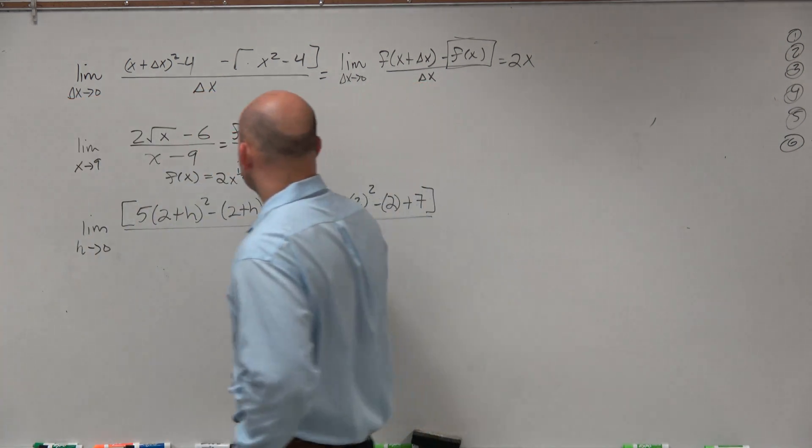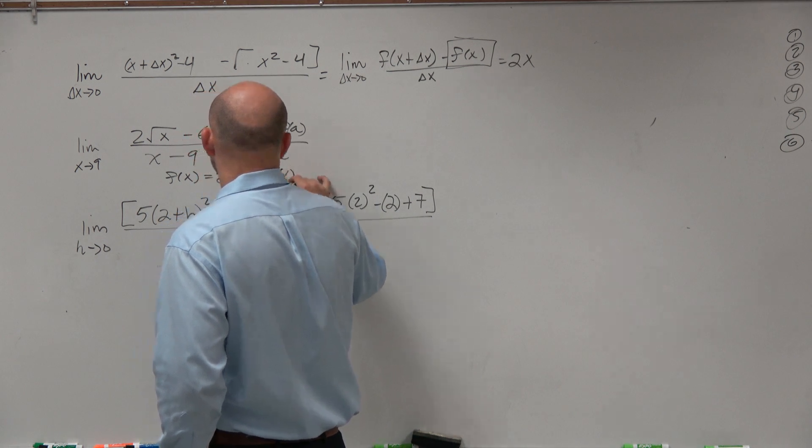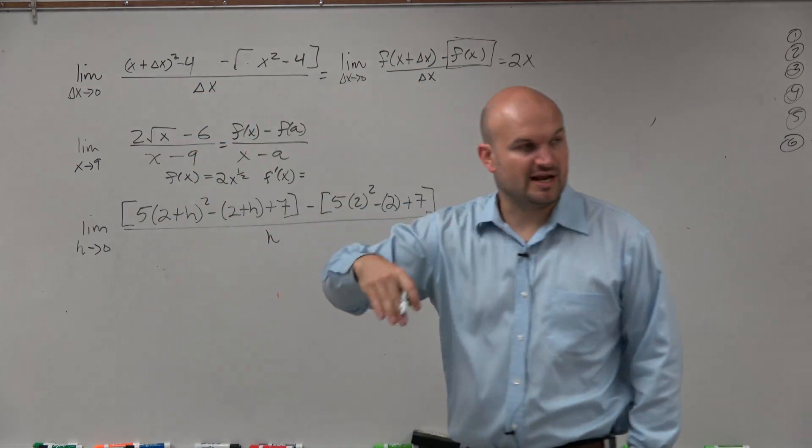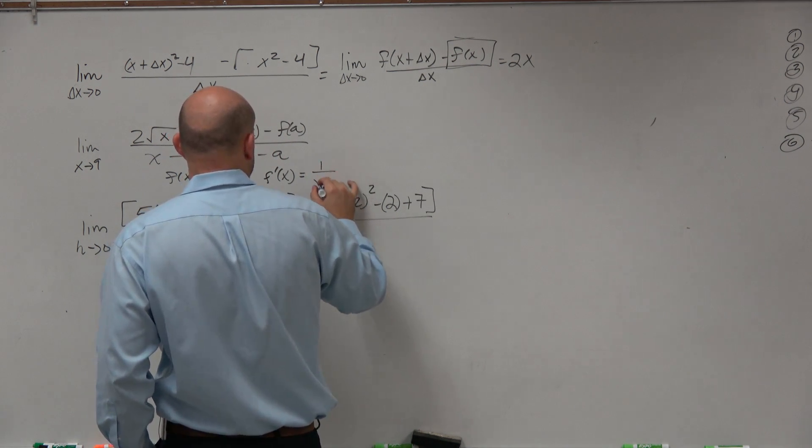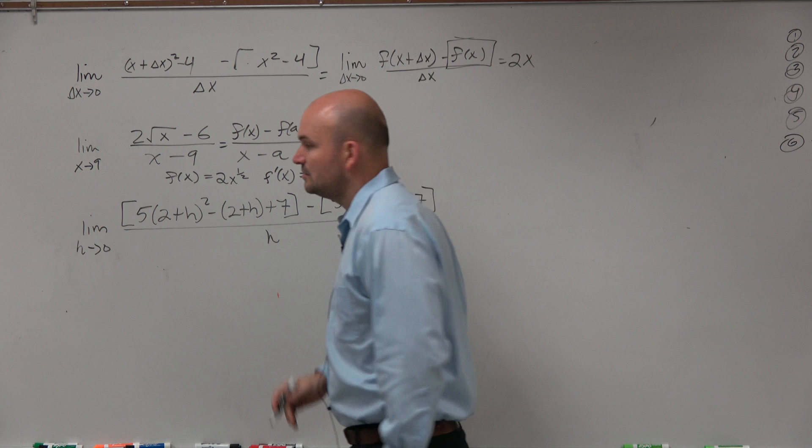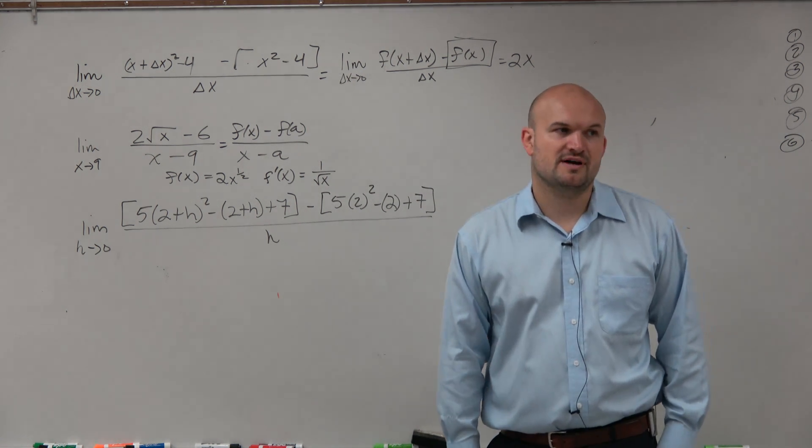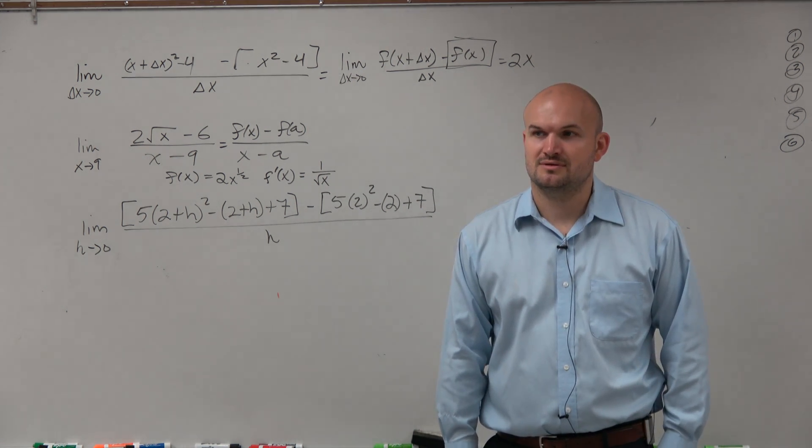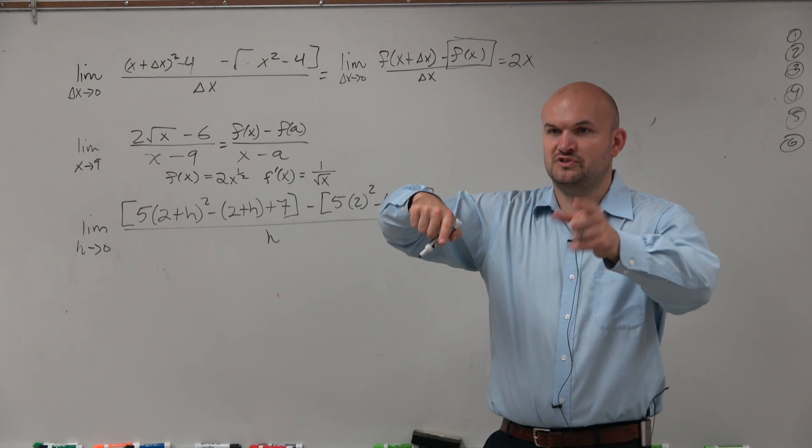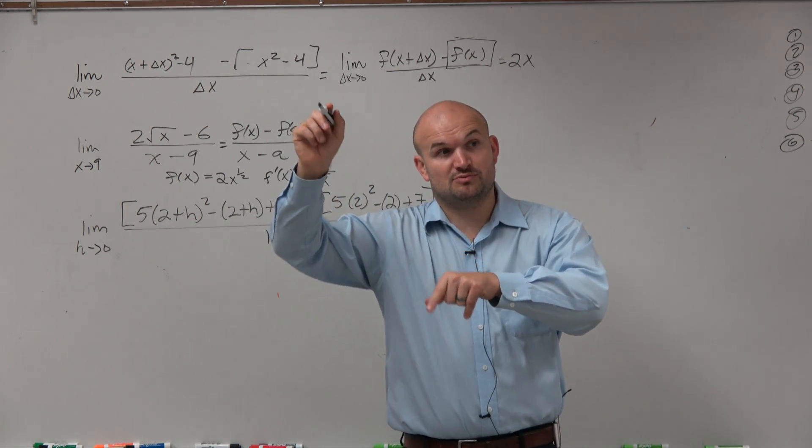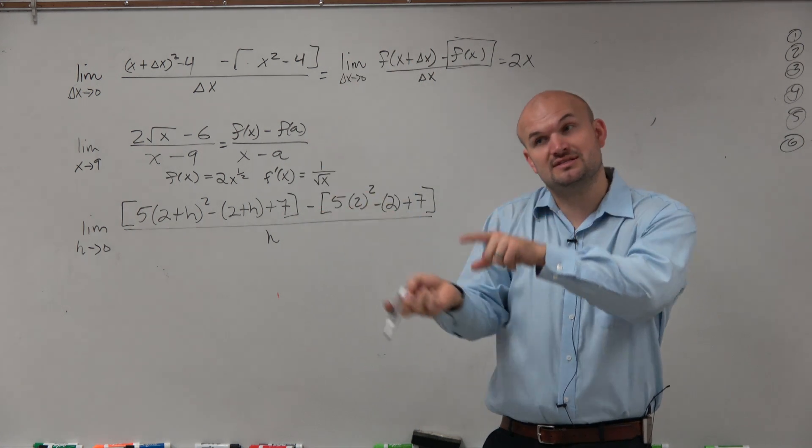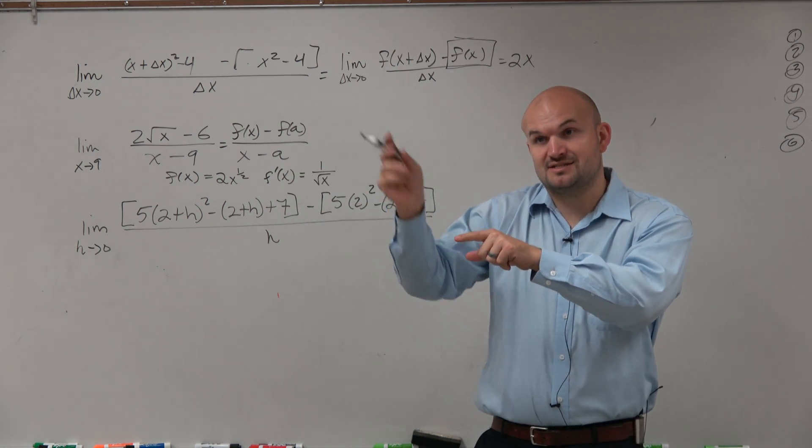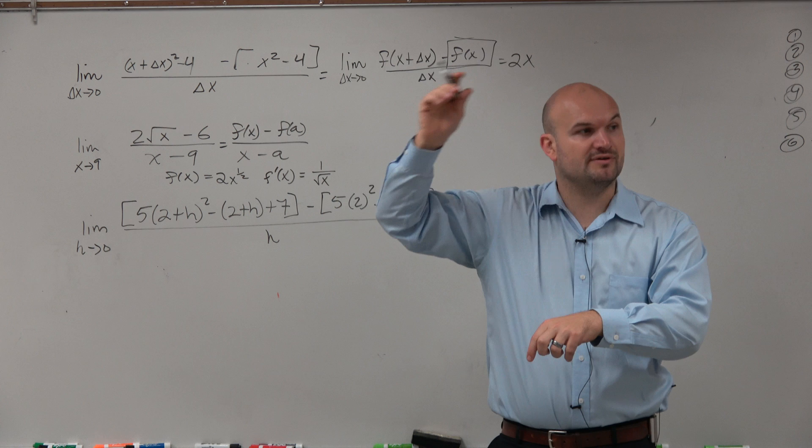So if I was going to do f prime of x, I'm going to bring down the 1 half and subtract. So that's going to be basically 1 over the square root of x. You guys follow or you want me to show some work? Bring down the 1 half. 2 times 1 half is 1. Subtract 1 from 1 half is negative 1 half. Since it's negative, it goes in the denominator. x to the 1 half in the denominator is the square root of x.